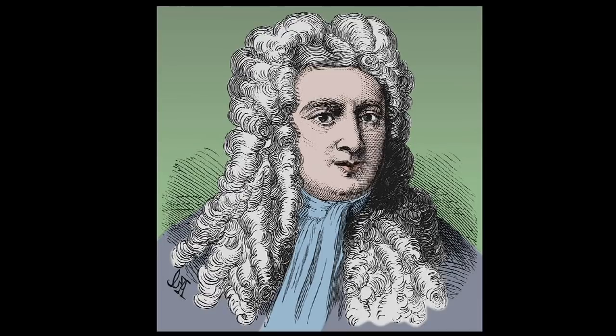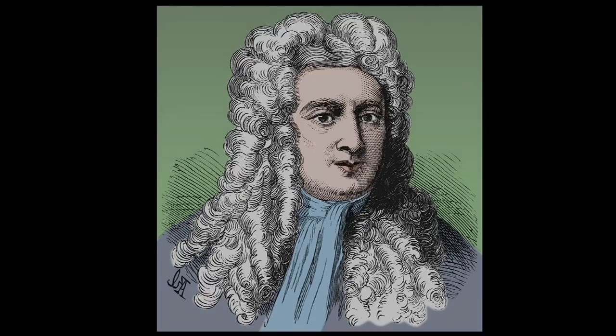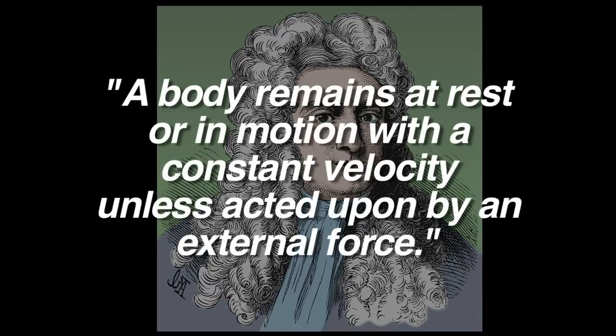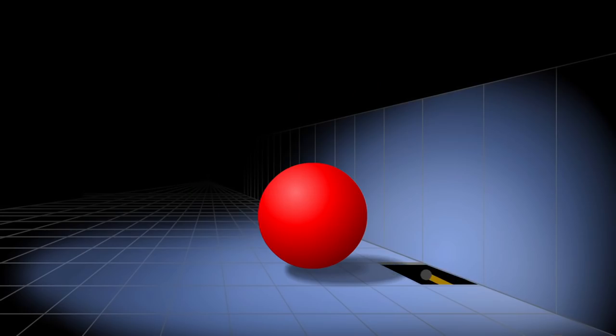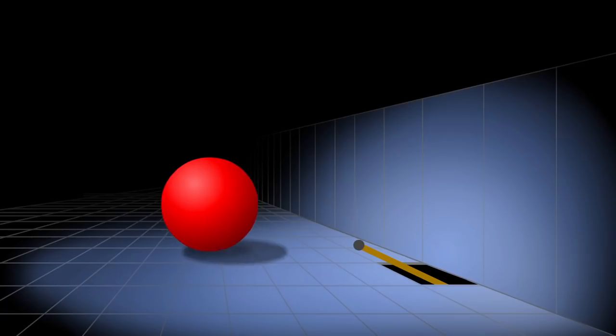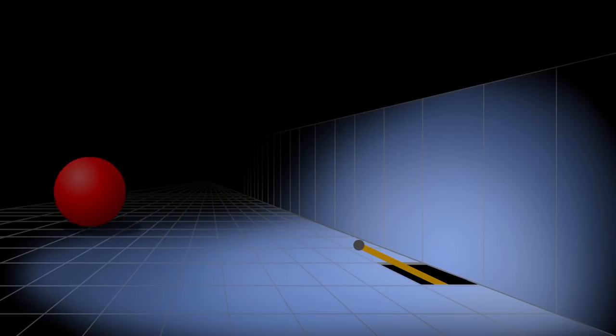Let's talk about the famous scientist, Sir Isaac Newton. He helped explain inertia in what is called Newton's First Law. A body remains at rest or in motion with a constant velocity unless acted upon by an external force. What this means is that an object at rest won't move unless another force makes it move and an object in motion will continue moving unless some other force stops it.